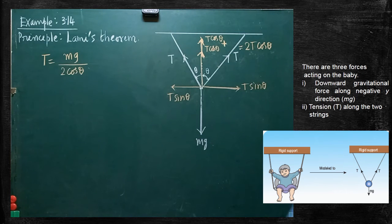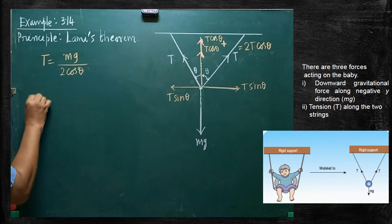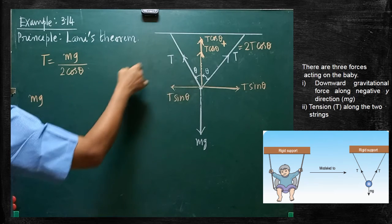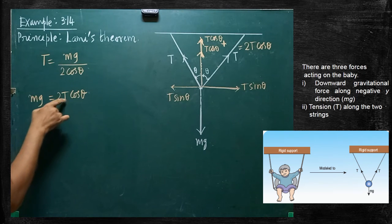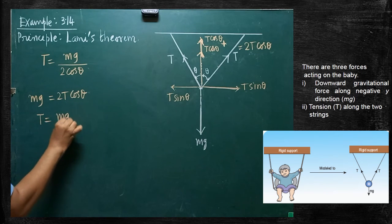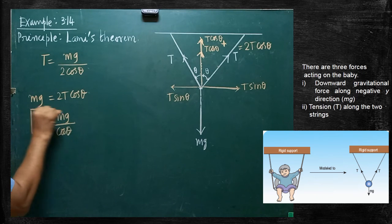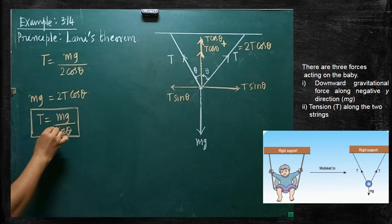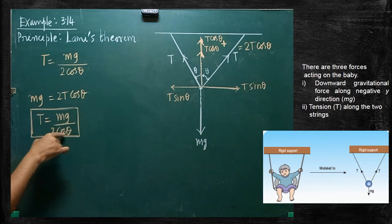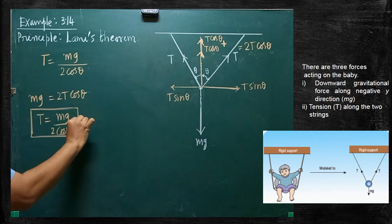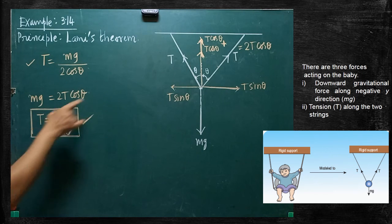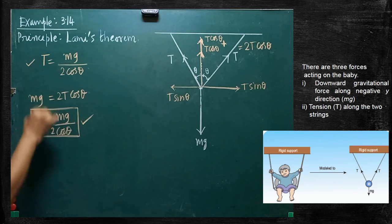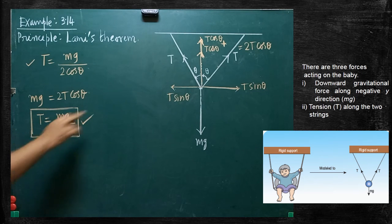These two horizontal components added give 2T cos theta, which will be equal to mg. So, gravitational force mg is equal and opposite to 2T cos theta. Therefore, 2T cos theta equals mg, which gives T equals mg divided by 2 cos theta. With the help of the resolution of vectors, I have got the same formula. This expression was also obtained with the help of Lamy's theorem. From both methods, we get the same expression for the tension acting in the string.